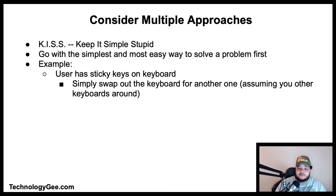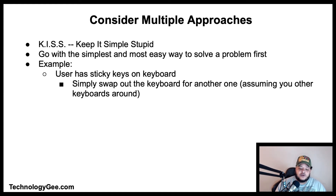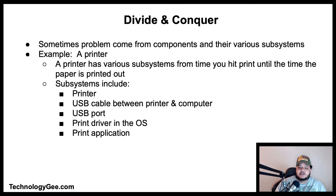You also need to consider multiple approaches. As a rule, apply the KISS rule — Keep It Simple, Stupid. Sometimes there are multiple approaches to solving a problem, but it is best to go with the simplest and easiest to implement. For example, if a user is experiencing sticky keys, simply swap out the keyboard so the user can continue working, instead of trying to take apart the keys to remove the stickiness.